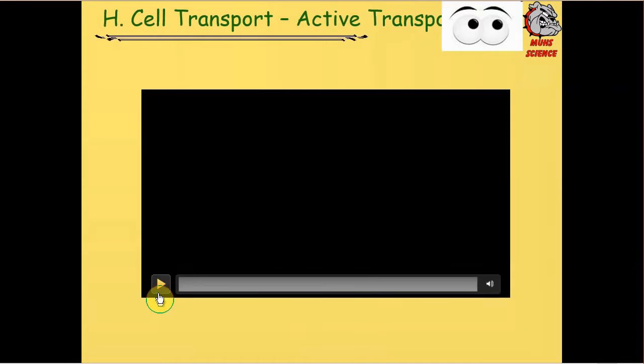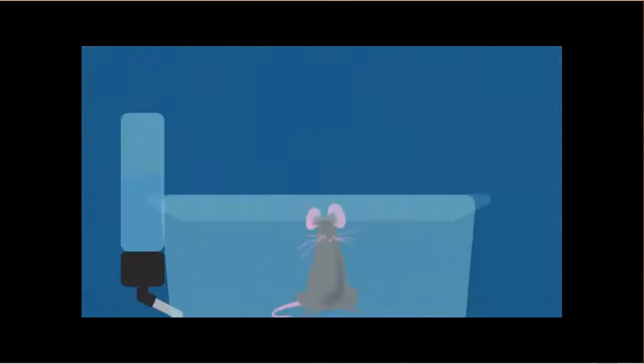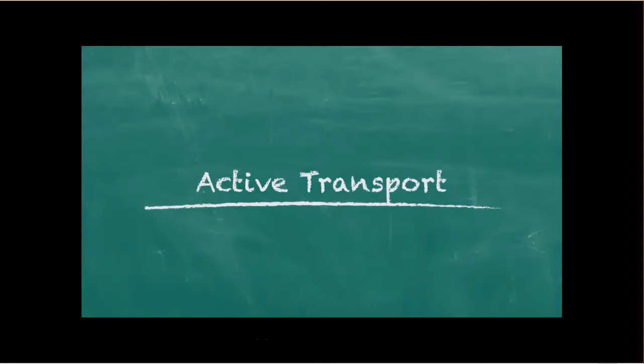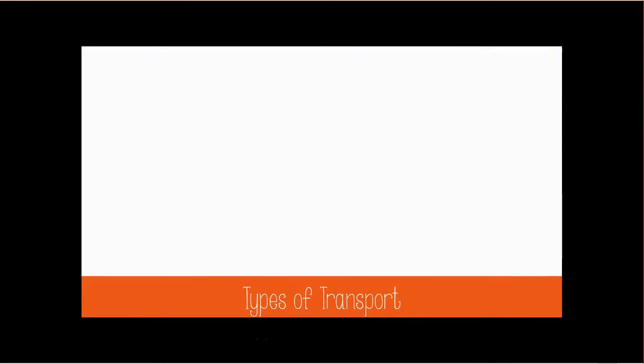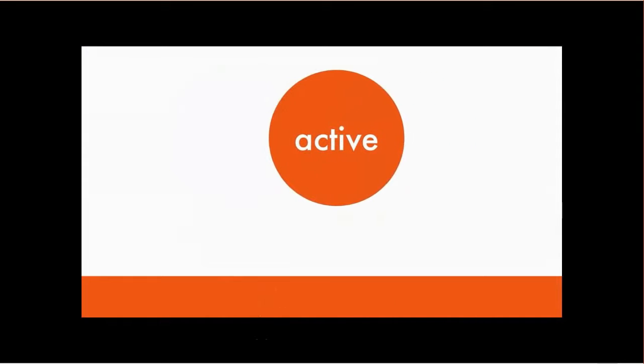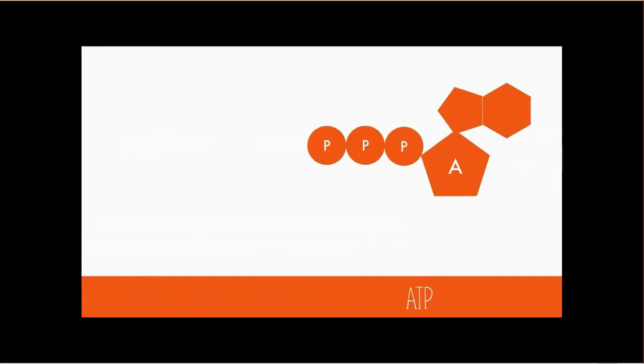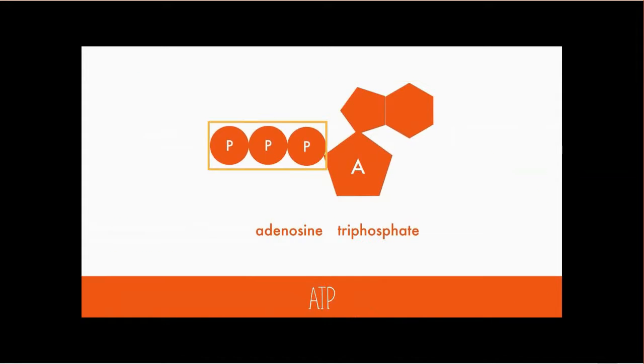And here's a short video on active transport. Recall that there are two types of cellular transport, passive and active. Passive requires no added energy, but active does require added energy. Active transport also moves from an area of low concentration to an area of high concentration or up the concentration gradient. This is the opposite of passive transport. And because it's more difficult, it needs the energy molecule called ATP, which stands for adenosine triphosphate, because there's an adenosine molecule and three phosphate molecules.